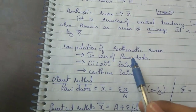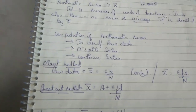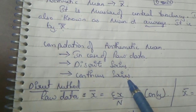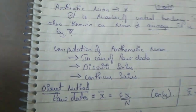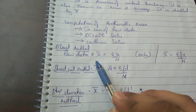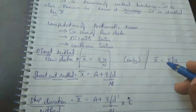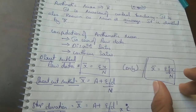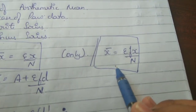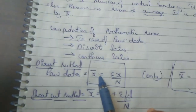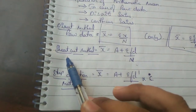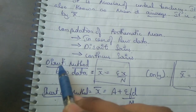Now let's learn computation of arithmetic mean. There are three stages: raw data, discrete series, and continuous series. For raw data we have three formulas. The first is used when we have just raw data. The second and third are used when we have class intervals and frequency. The direct method is for finding the mean directly.